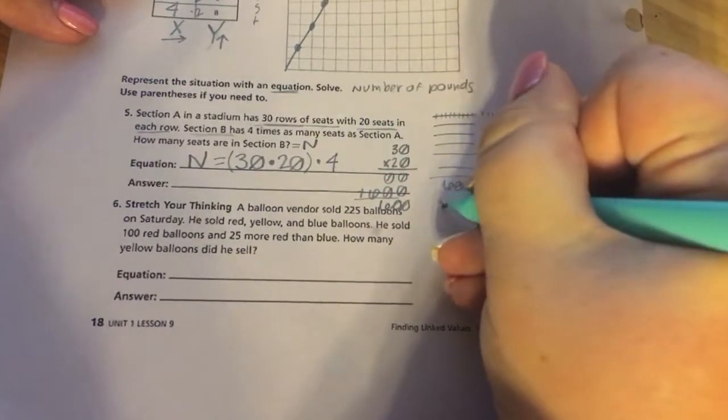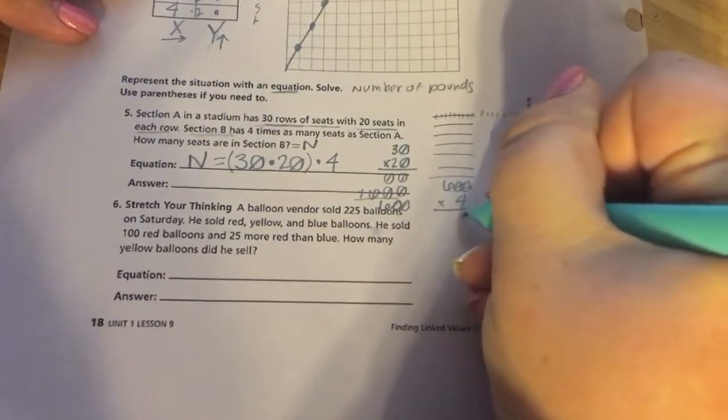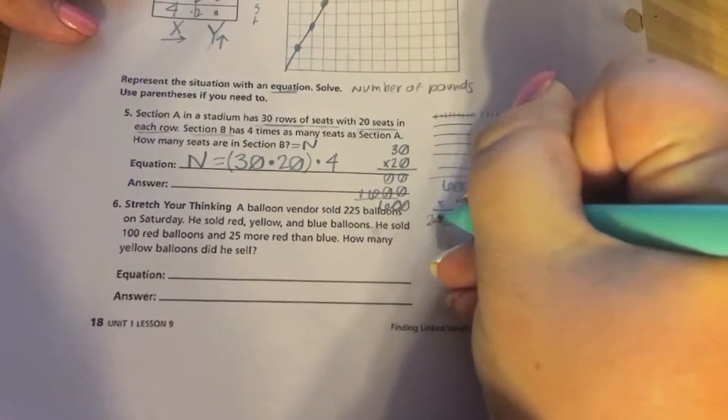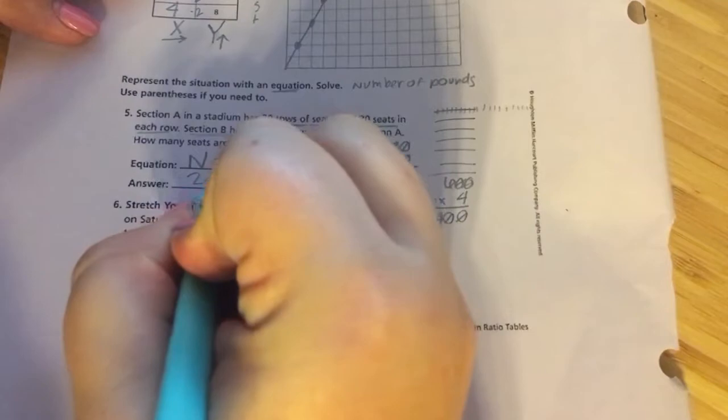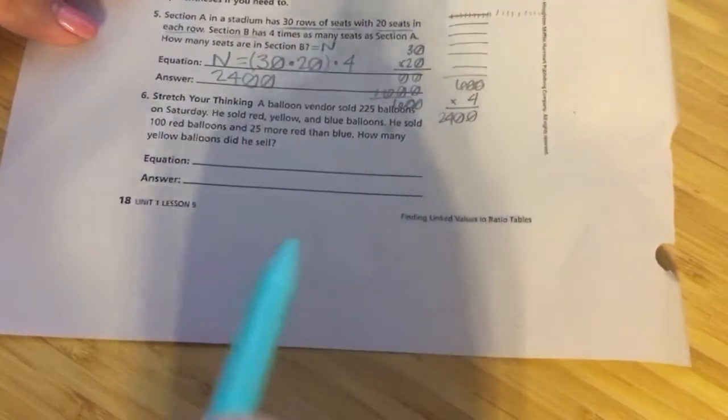Why? Again, section B has four times as many seats as section A. So how many seats are there? So total, in section B, there's 2,400 seats.